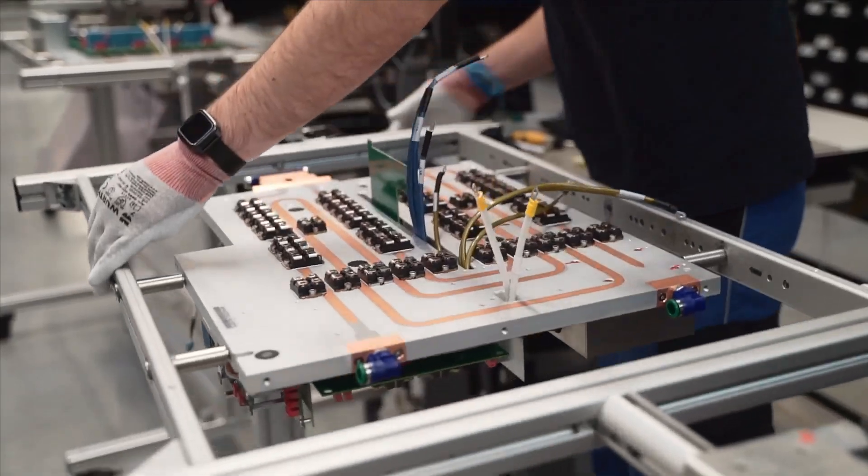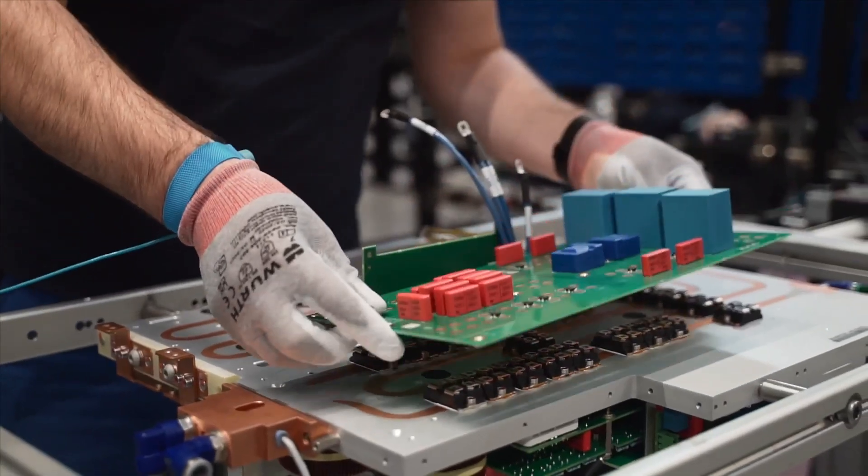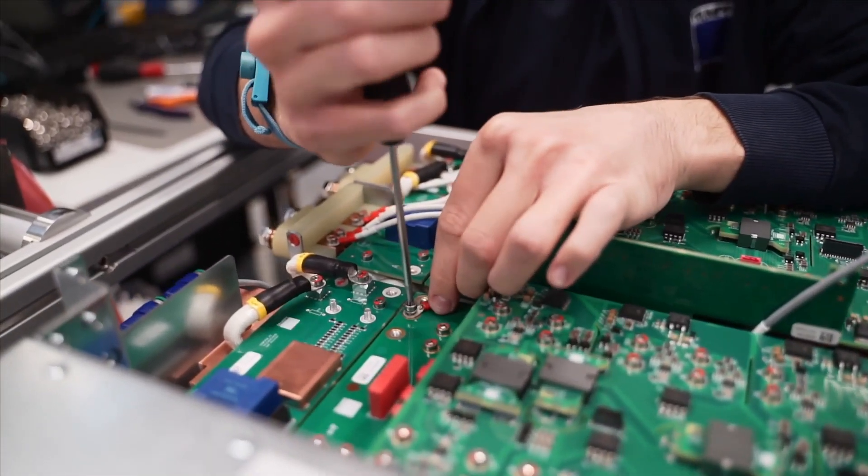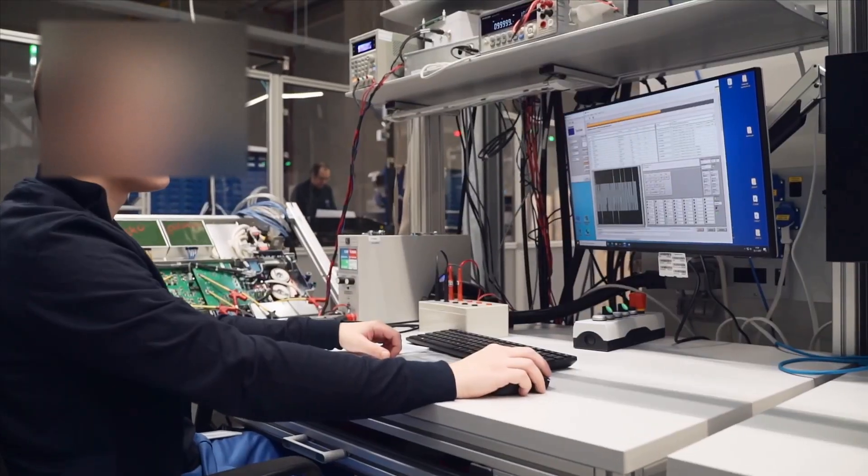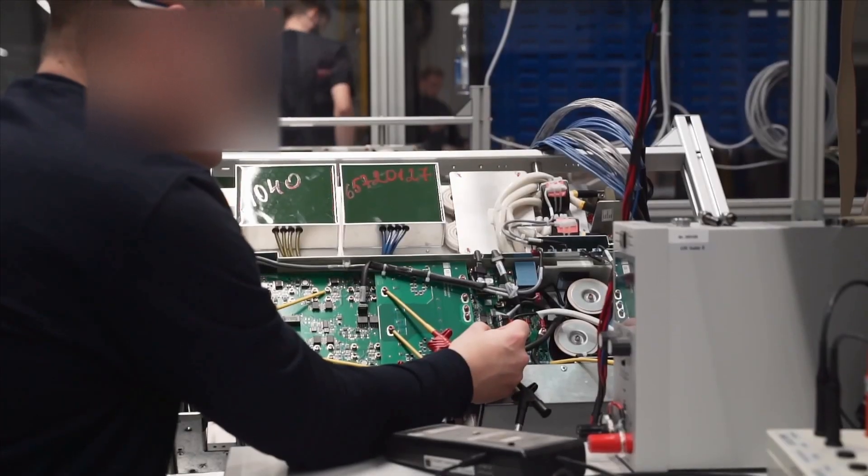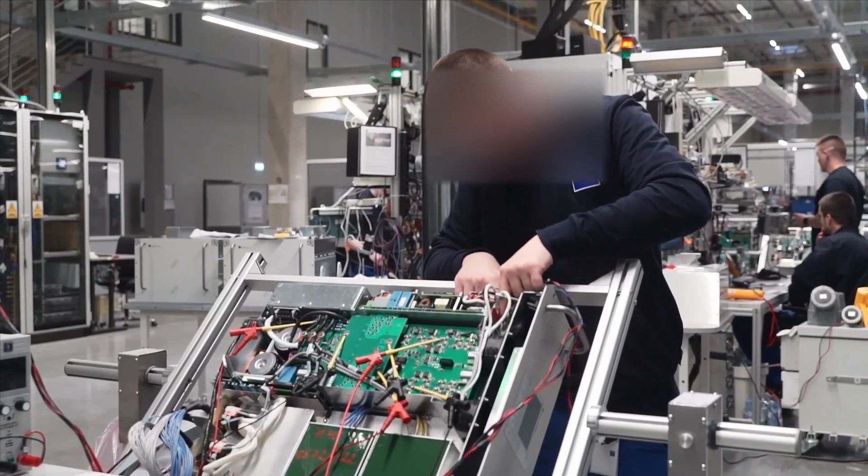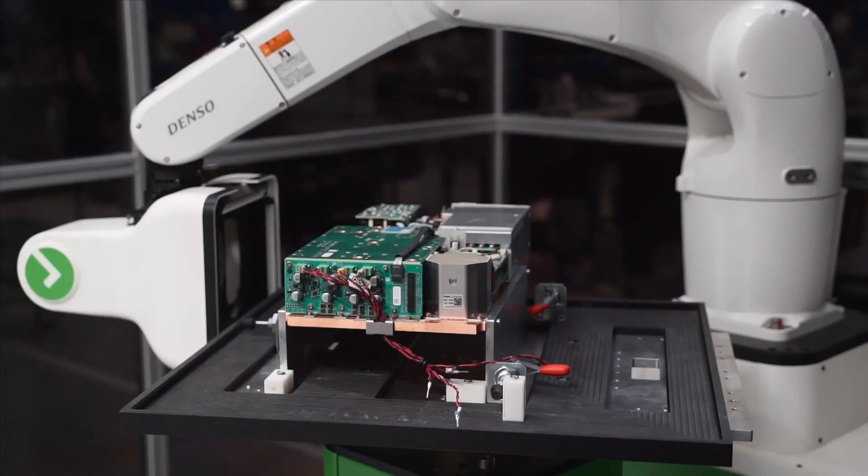In the next production step, PCBs and other components are installed. Now is the time for functional tests, to check if the device is operating according to specification. Load tests are also carried out under extreme conditions. All production data and test results are recorded in the ERP system.